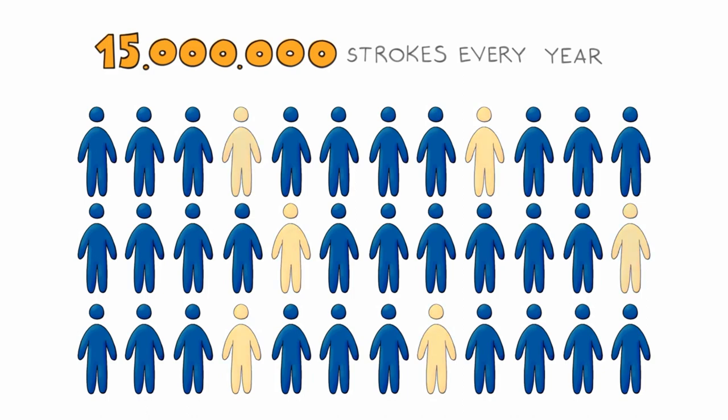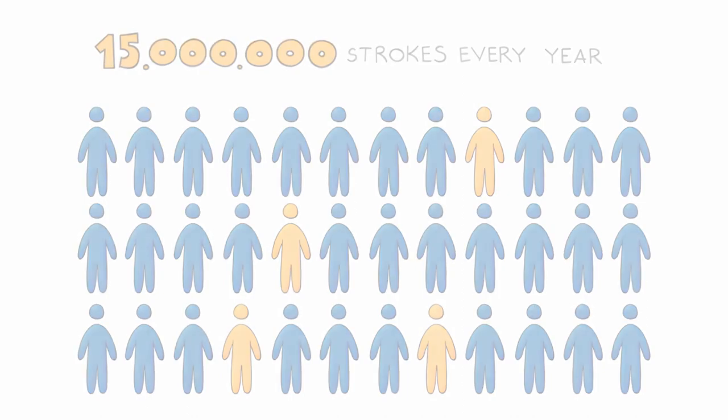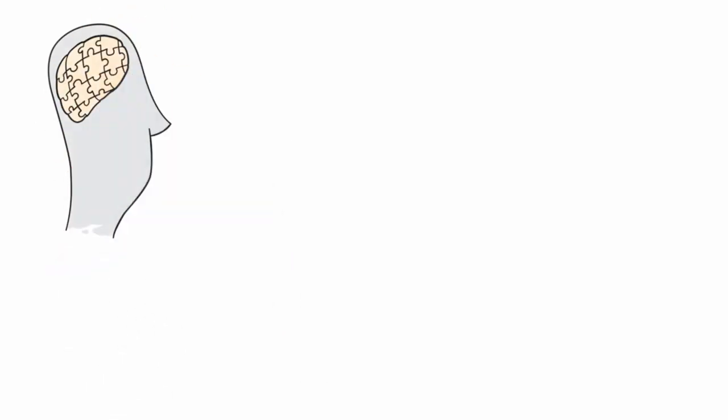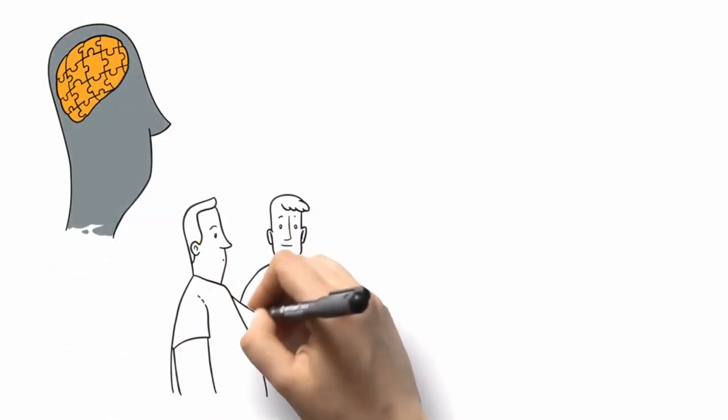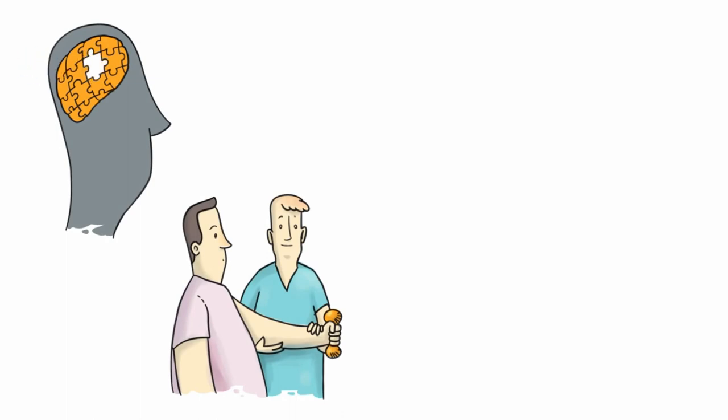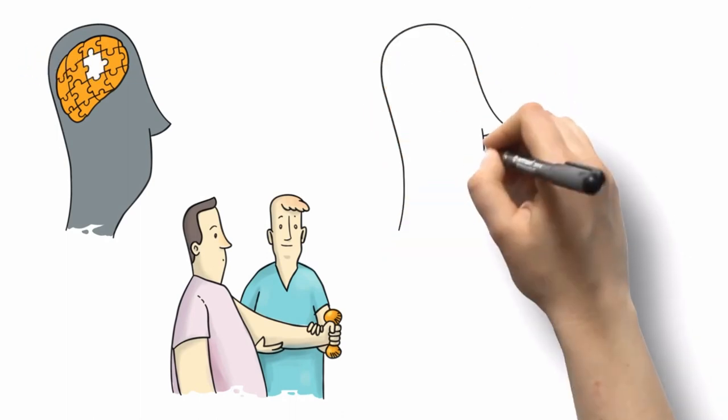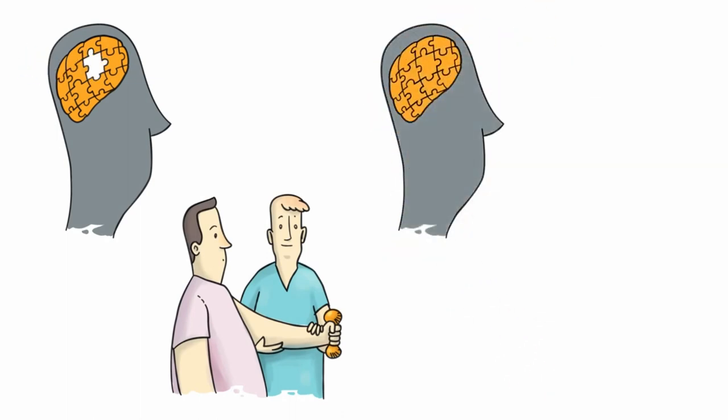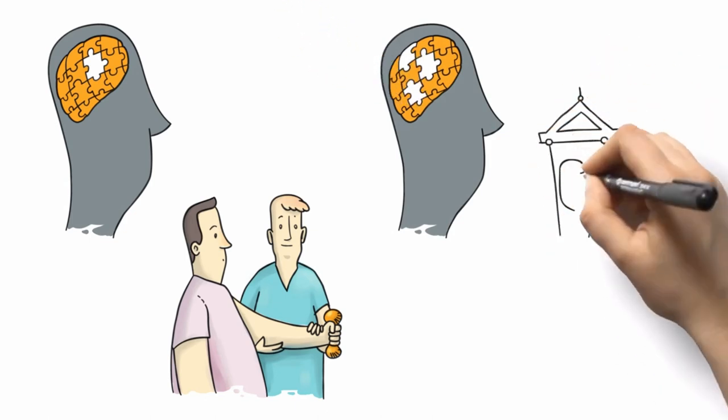While full recovery is possible, many survivors end up having some type of disability. Depending on where one's brain is damaged, a person may have less serious weakness or spasticity of a limb. But for most survivors, stroke rehabilitation is a long-term process lasting months and even years.